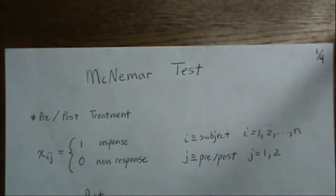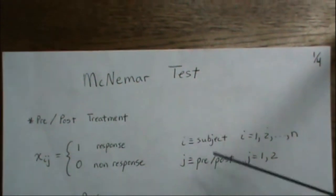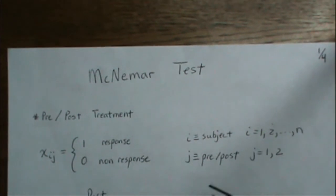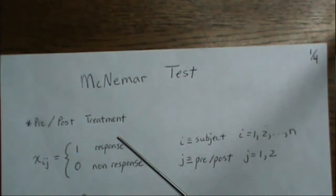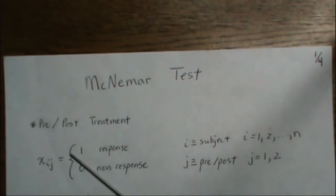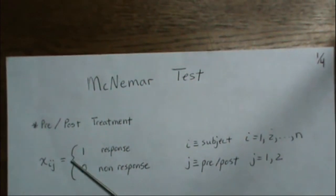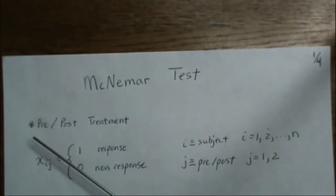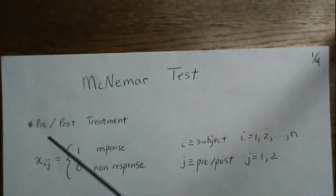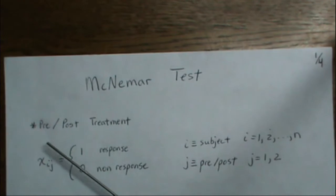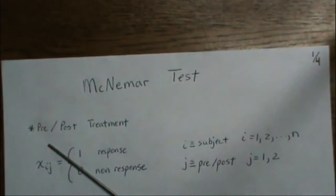In this video, we're going to look at deriving a formula for the sample size to achieve a certain power for the McNemar test. The McNemar test is where you have a pre-post situation — sometimes a matched controls situation — where you take a measurement pre and then a measurement post, and each measurement is dichotomous: one or zero, normal or abnormal.